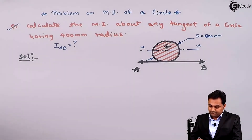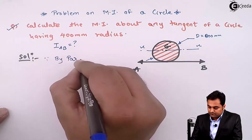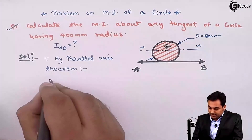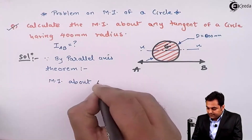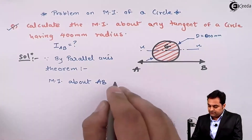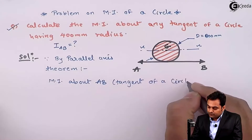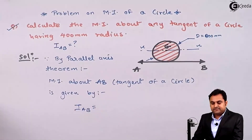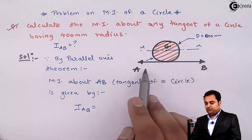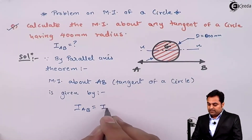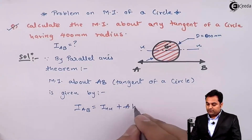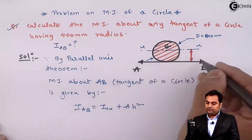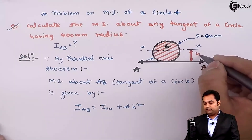By the parallel axis theorem, I_AB is equal to I_XX plus Area times h squared, where h is the distance between the two axes — that is, the axis on which we want to calculate the MI and the axis to which it is parallel.